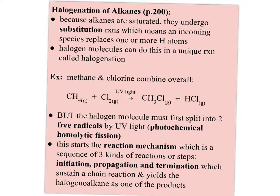I'm going to try and make it as clear as possible, but it is by far one of the more complicated equations to follow, especially if you have to supply the reactions. Because alkanes are saturated, they only undergo substitution reactions, which means an incoming species has to knock off one or more hydrogen atoms to take its place, or even break apart the carbon backbone. Halogen molecules do this in a unique reaction called halogenation.